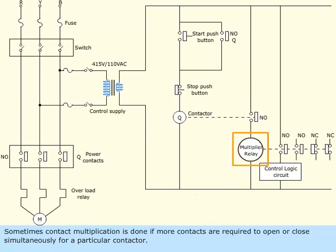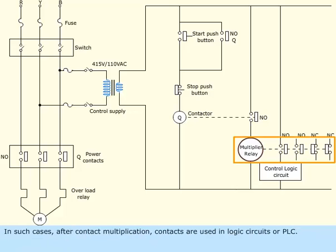Sometimes contact multiplication is done if more contacts are required to open or close simultaneously for a particular contactor. In such cases, after contact multiplication, contacts are used in logic circuits or PLC.